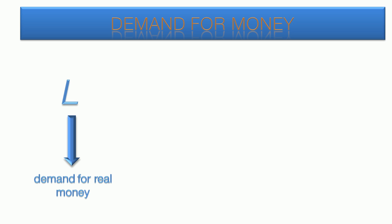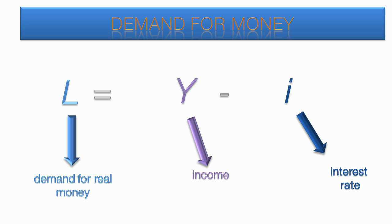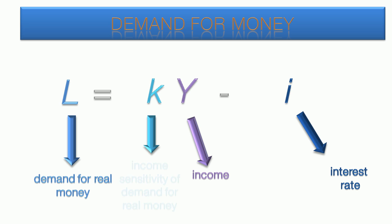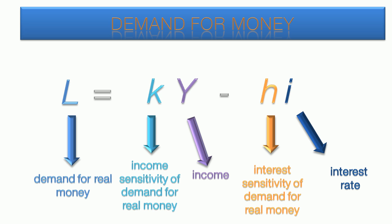Demand for real money is represented by the letter L. Real money is adjusted for inflation, so this indicates the actual purchasing power of money. The amount of demand depends on income, because that determines the amount people have available to spend, and it depends on the interest rate, because money can be put to better use if it is invested. As the minus sign indicates, the higher the interest rate, the more inclined people are to invest their money rather than having it available to spend. These two variables are moderated by the sensitivity coefficients: the income sensitivity for demand for real money, and the interest sensitivity of demand for real money. Both of these have a value greater than zero.